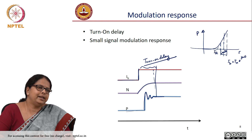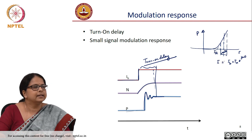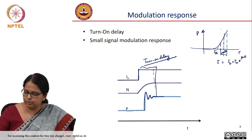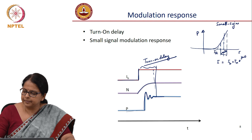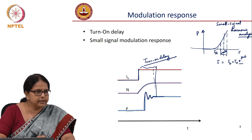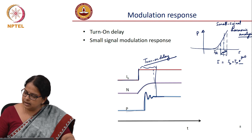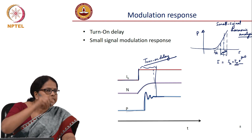How did we do this for LED? We said the current in the system is IB plus a small signal harmonic term — we did what is called small signal harmonic analysis. The current is harmonic and small signal, meaning IM is very small compared to IB. The modulation is a small signal modulation.